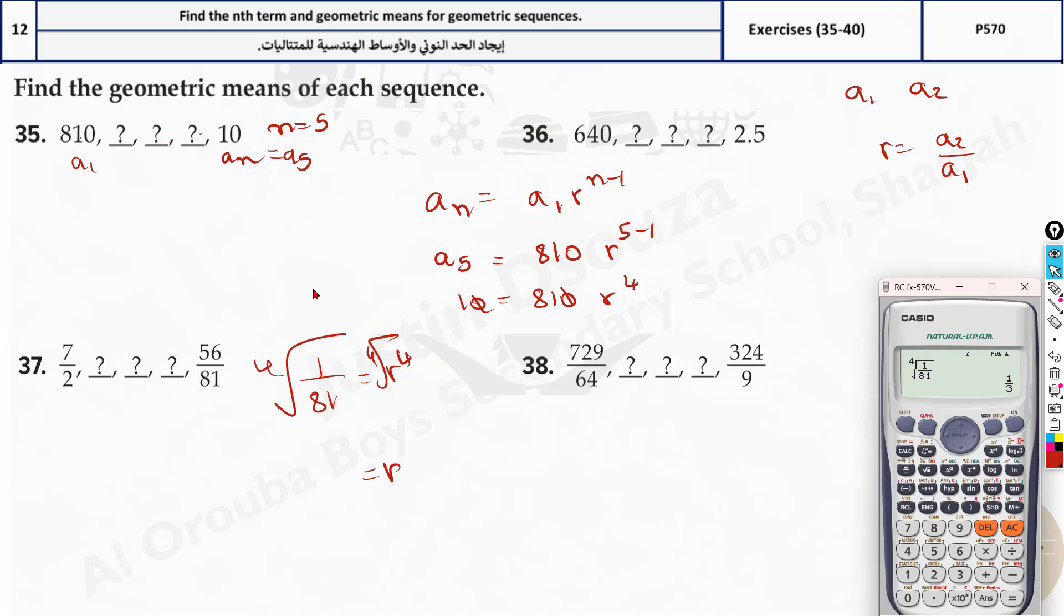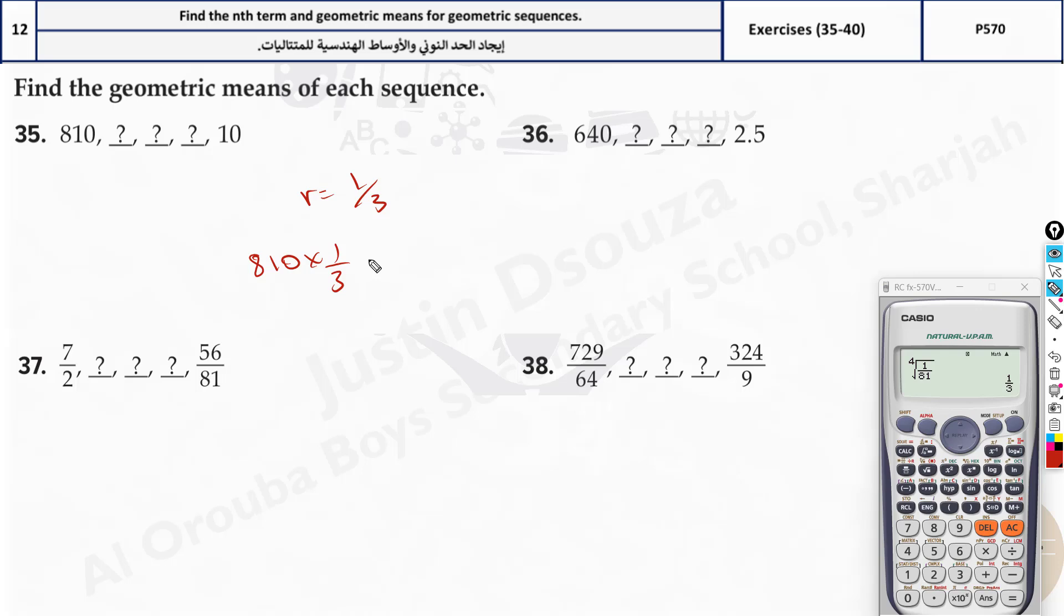Oh now, that is just r. Wait a minute. We will do the answer now. We came to know r over here is 1 by thirds. So that means you have to multiply 810 by 1 third to get the next term. And that's not it. You need to keep on multiplying 1 third three times. So we can do that in the calculator.